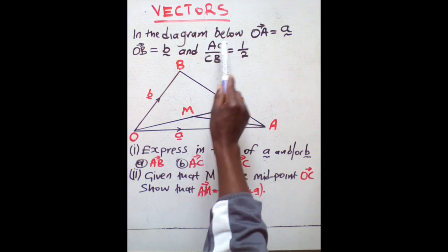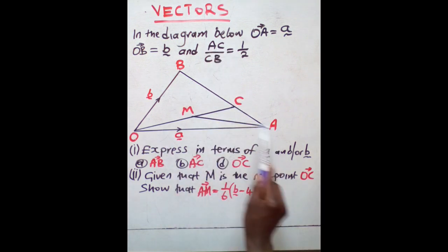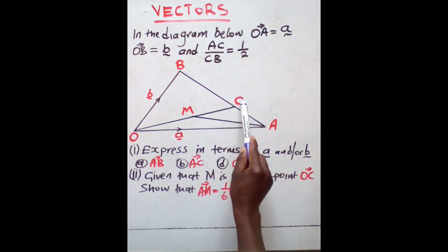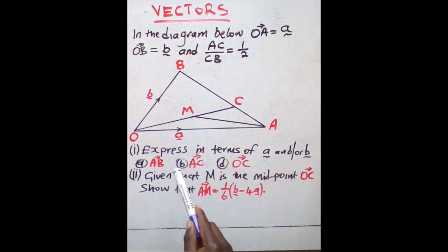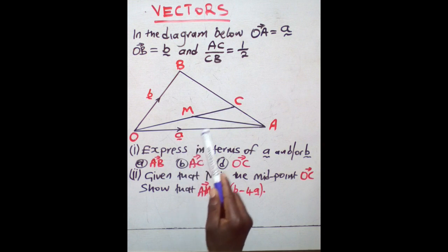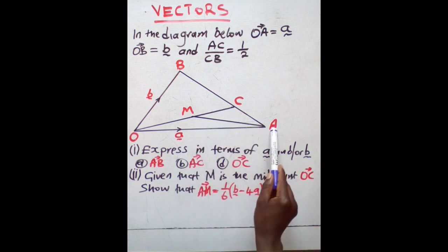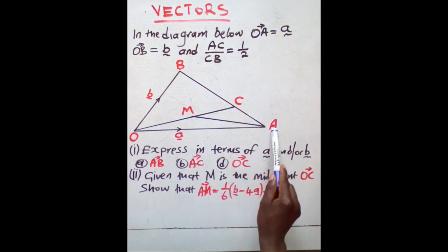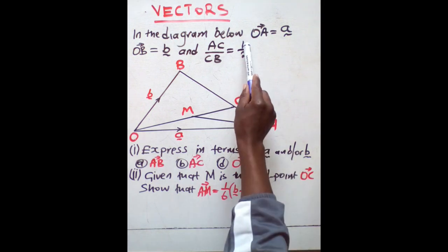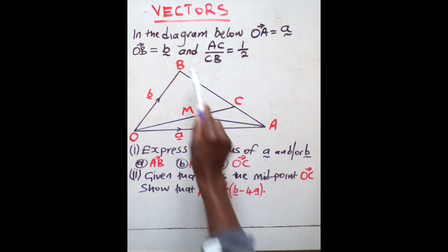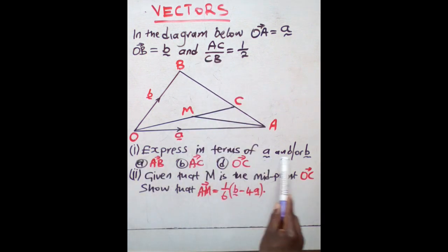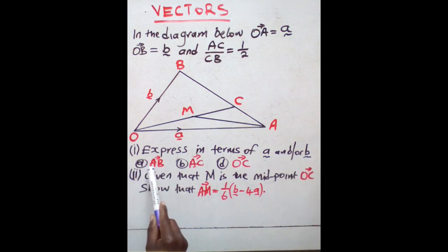Then AC to CB is equal to 1 to 2. Though written in fraction form, these are ratios. This means AC corresponds to that 1, and CB corresponds to that 2. So in terms of ratios, from A to B you have 1 plus 2. From A to C it is just that 1, and from C to B it is just that 2. Express in terms of a and/or b: part A and part B.